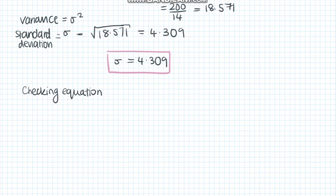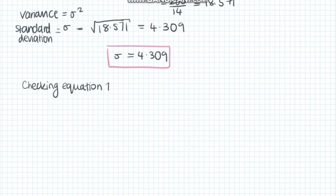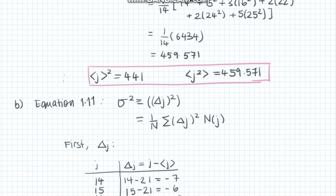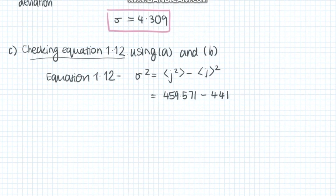Part c asks us to use equation 1.12 to check that the value of the variance we calculated in part b is the same as the one we can calculate using the values from part a. Plugging in the numbers, we can see that the values of the variance are consistent.